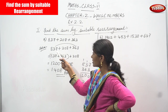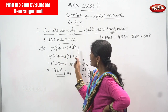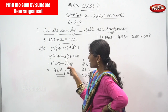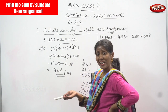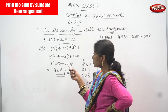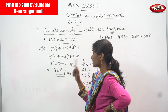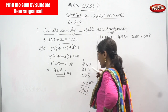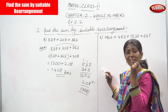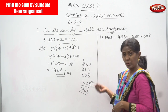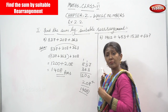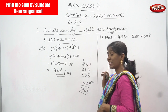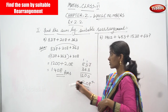7 plus 3 is 10 — write 0, carry over to the tens place. 3 plus 1 is 4, 4 plus 6 is 10 — write 0, carry over to the hundreds place. 8 plus 1 is 9, 9 plus 3 is 12. The answer is 1200. Then add the second number 208: 0 plus 8 is 8, 0 plus 0 is 0, 2 plus 2 is 4, bring down 1. The answer is 1408.